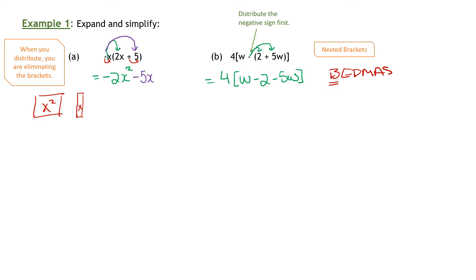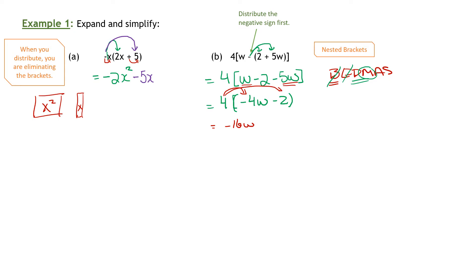Is there anything that can be done inside those brackets? Yes, we have some like terms right here. Inside the brackets I've got W minus 5W, which is negative 4W. And then the constant is minus 2. Now we look back at BEDMAS. There are no exponents, but there is multiplication — the 4 that's in front. So my next step is to distribute that 4: 4 times negative 4W gives me negative 16W, and 4 times negative 2 is negative 8.